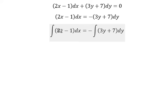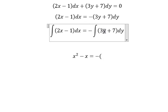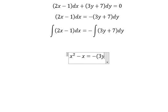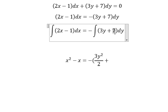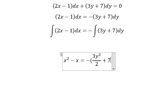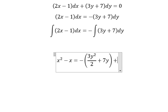The integration of 2x we have x squared. The integration of negative 1 we have negative x. The integration of 3y we have 3y squared over 2. The integration of 7 we have 7y, and we put it about C.